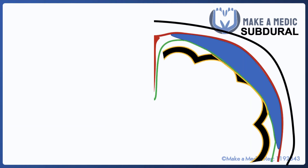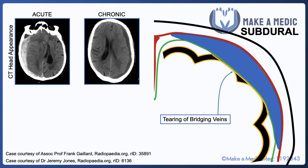A subdural hemorrhage, on the other hand, occurs due to the tearing of the bridging veins which go across the meningeal layers. They can be described as either acute or chronic, and the CT appearance can give you an indication as to which one it is.